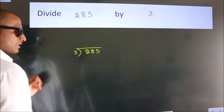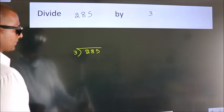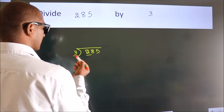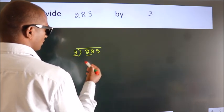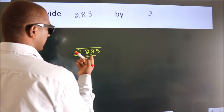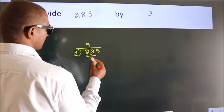This is step 1. Next, here we have 2, here 3. 2 is smaller than 3, so we should take 2 numbers: 28. A number close to 28 in the 3 table is 3 nines, 27.